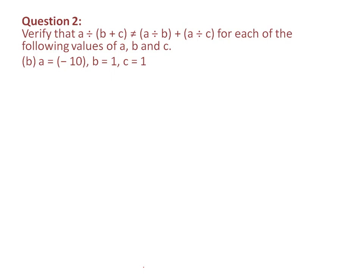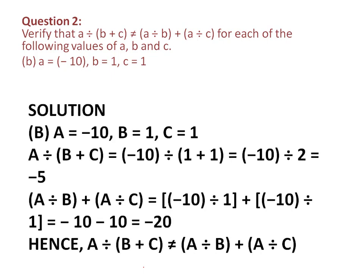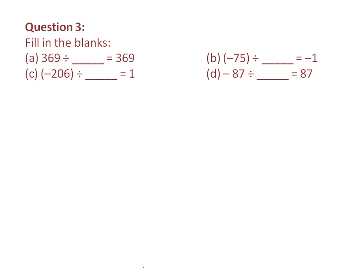I have solved the first part; the other parts you have to solve yourself — I'll show the solution but not explain every step, as it's the same method. Take LHS and RHS separately, put in the values, and at the end they will not come out equal, which verifies the statement. The calculations are not too complex; the main focus is on learning the sign conventions when dividing or multiplying two numbers.